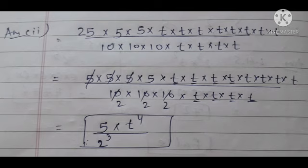Next, second question. In answer, 25 multiply - 5 ka power is 2, t ka power 8, so t is written 8 times. In denominator, 10 ka cube - 10 ko 3 times and t ki power 4, so t is 4 times written.